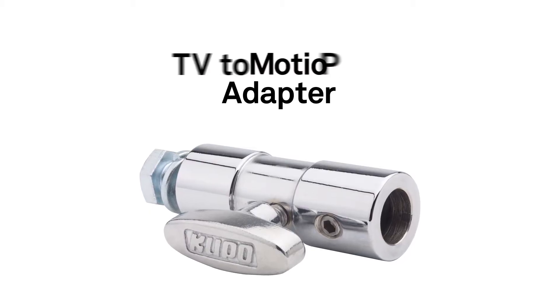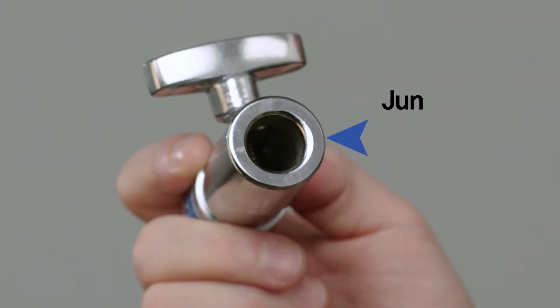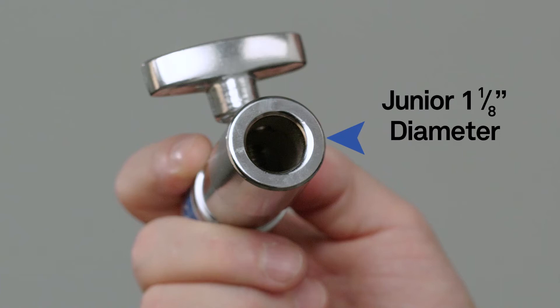Hello and welcome to this short video on a Kupo TVMP adapter. The TVMP, or TV to motion picture adapter, has a baby 5/8 inch receiver on the inside and a junior 1 1/8 inch diameter on the outside.